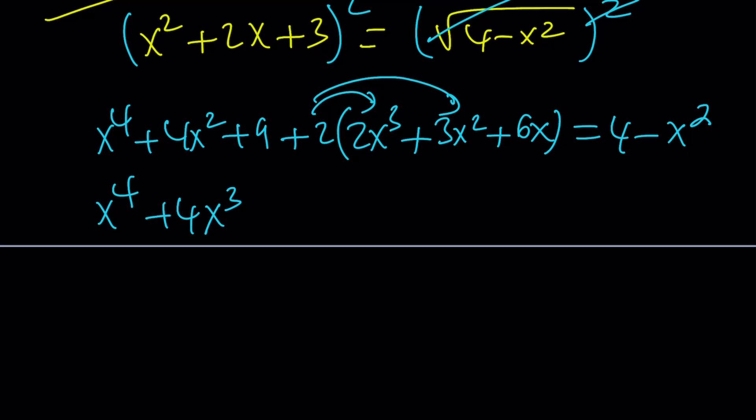x to the fourth plus 4x cubed. And then plus 6x squared plus 4x squared. That's going to make 10x squared. So we're taking care of both of these. And then plus 12x plus 9, you see I underline as we go, equals 4 minus x squared.